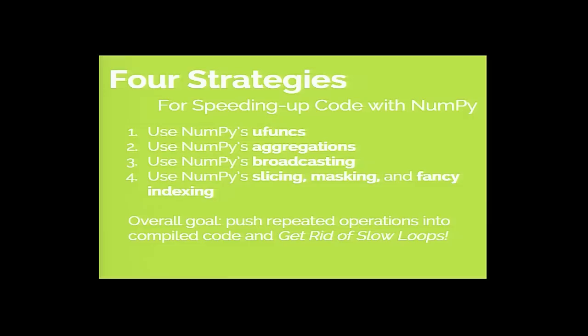The four strategies boil down to trying to get rid of loops in your code. The first strategy is ufuncs, the second is using aggregations, the third is using broadcasting, and the fourth is using slicing, masking, and fancy indexing. I want to emphasize the overall goal is to remove Python loops from your code. If you have a Python loop that's more than three or five repetitions, your code is going to be slower than it has to be.